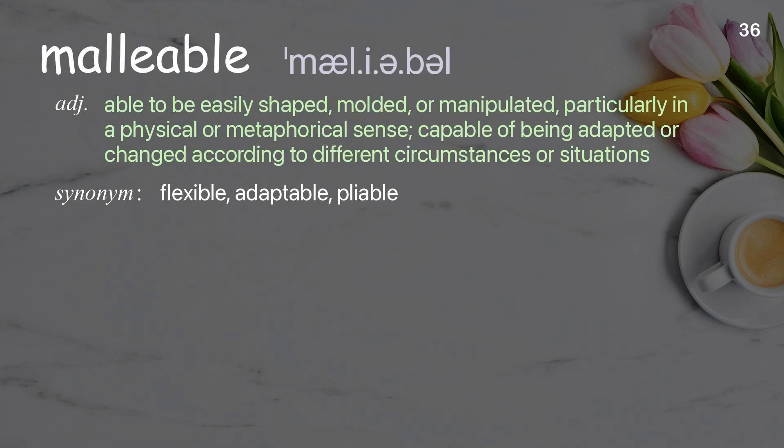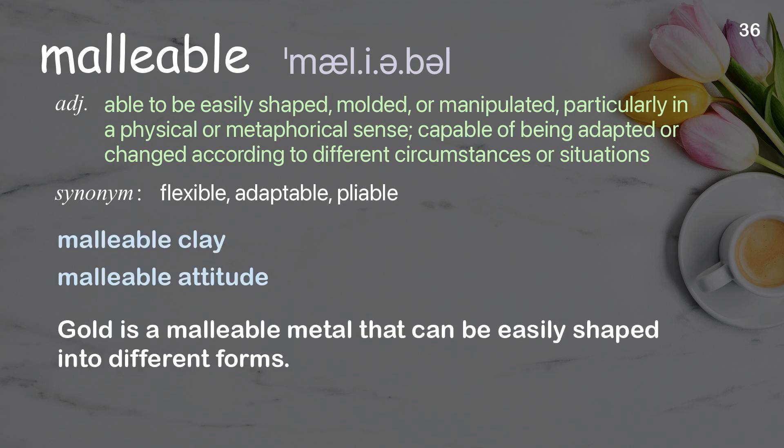Malleable: Able to be easily shaped, molded, or manipulated, particularly in a physical or metaphorical sense; capable of being adapted or changed according to different circumstances. Examples: Malleable clay. Malleable attitude. Gold is a malleable metal that can be easily shaped into different forms.